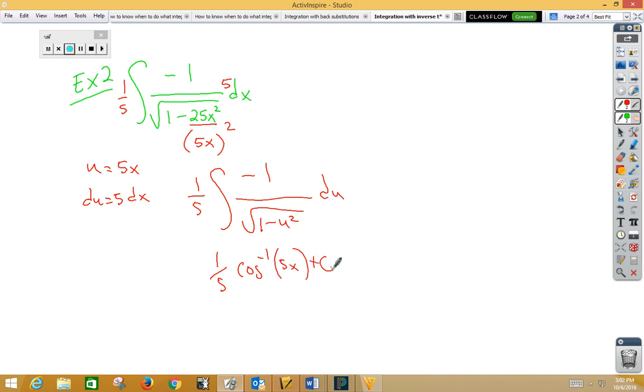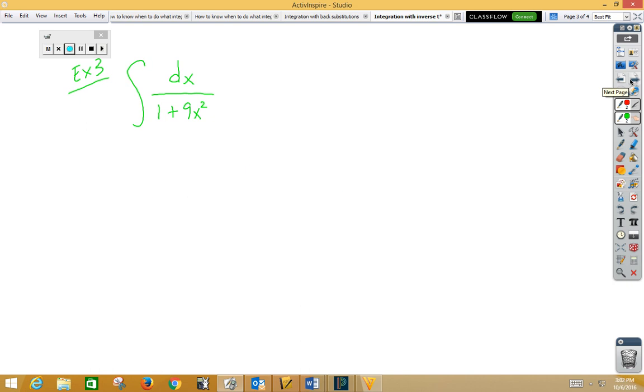Let's do another example. So in my third example, again, we're looking at what goes inside there. To make a 9x squared, I would need a 3x. So u is 3x, du is 3 dx.